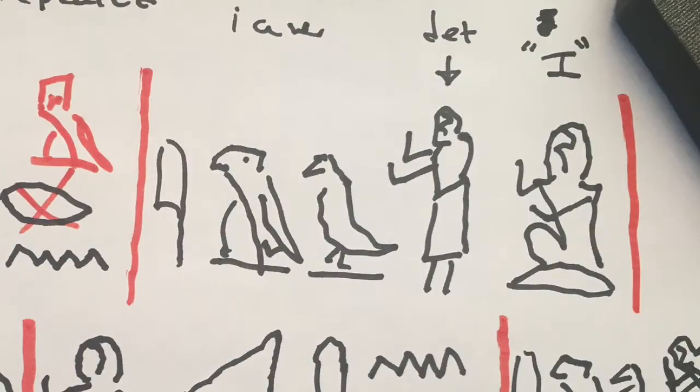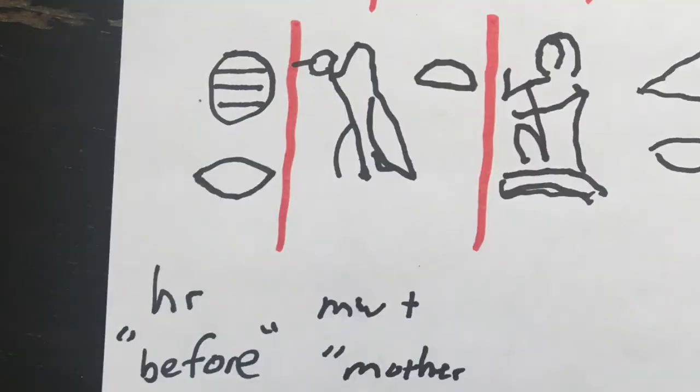The next word we have is "aiu" — the papyrus, the vulture, and the chick — followed by a determinative of a man pointing up. If you remember from last week, this means to praise.